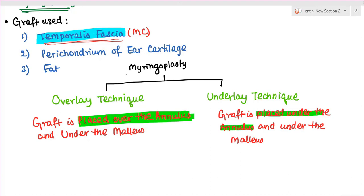There are two techniques for myringoplasty: overlay technique and underlay technique. As the name suggests, in overlay technique the graft is placed over the annulus and under the malleus. In underlay technique, the graft is placed under the annulus and under the malleus.